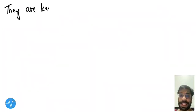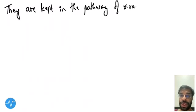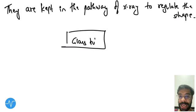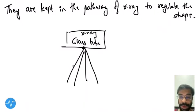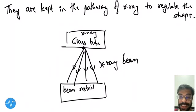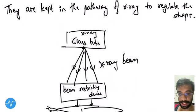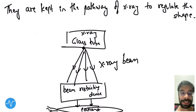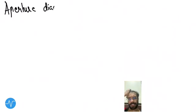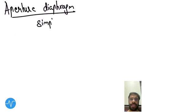Where are they placed? They are kept in the pathway of x-rays to regulate the shape. The x-ray beam is produced from the glass tube, hits the beam restricting device which restricts its shape, and this restricted beam then hits the patient. Therefore, it is kept between the tube and the patient.